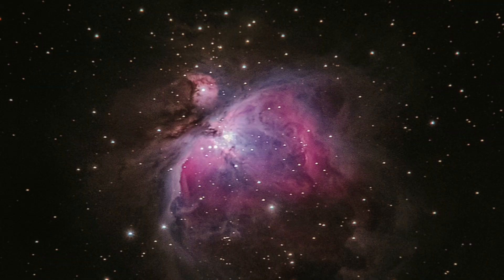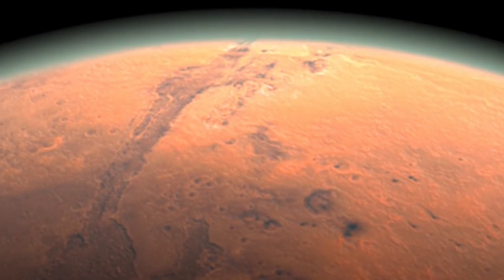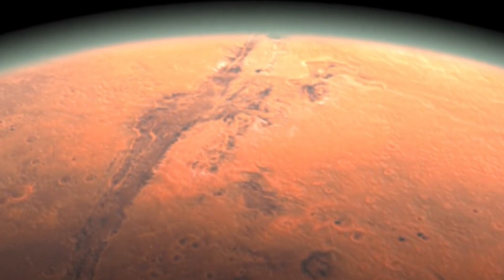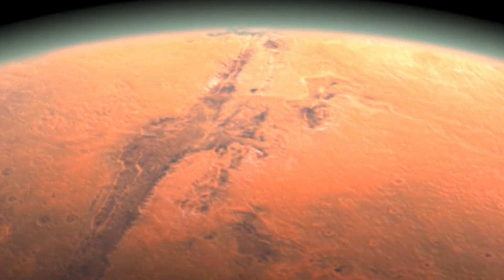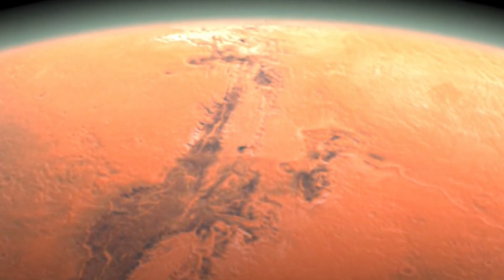TrES-4b is a gas giant, similar to Jupiter in our solar system, but it holds the record for the largest radius of any known exoplanet. Its size is approximately 1.7 times that of Jupiter, making it an intriguing celestial body for astronomers studying the diversity of planets beyond our own solar neighborhood.